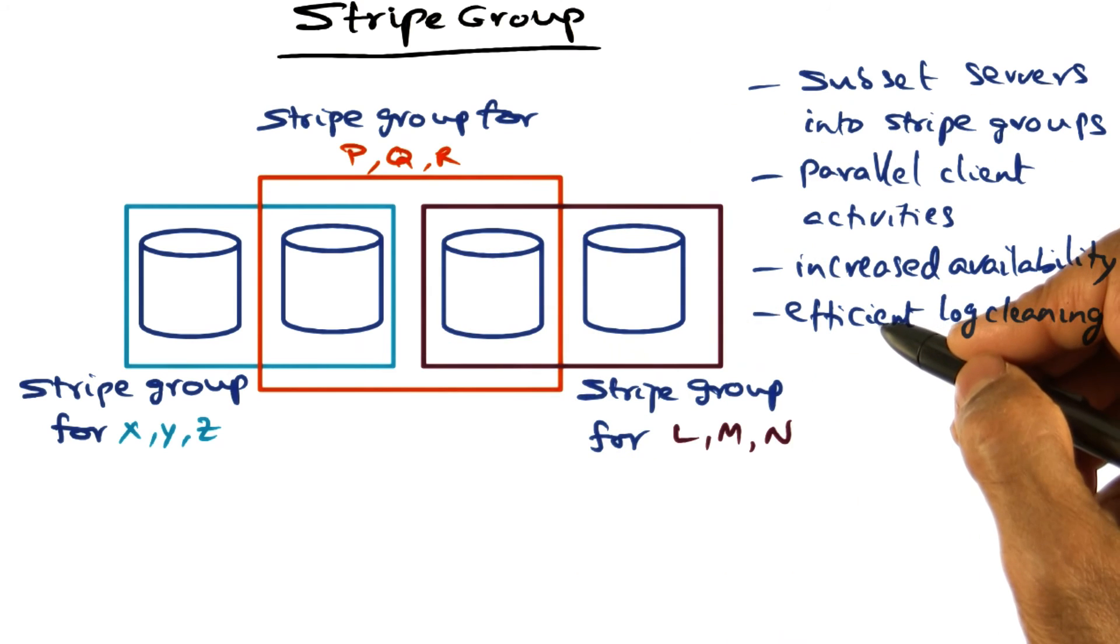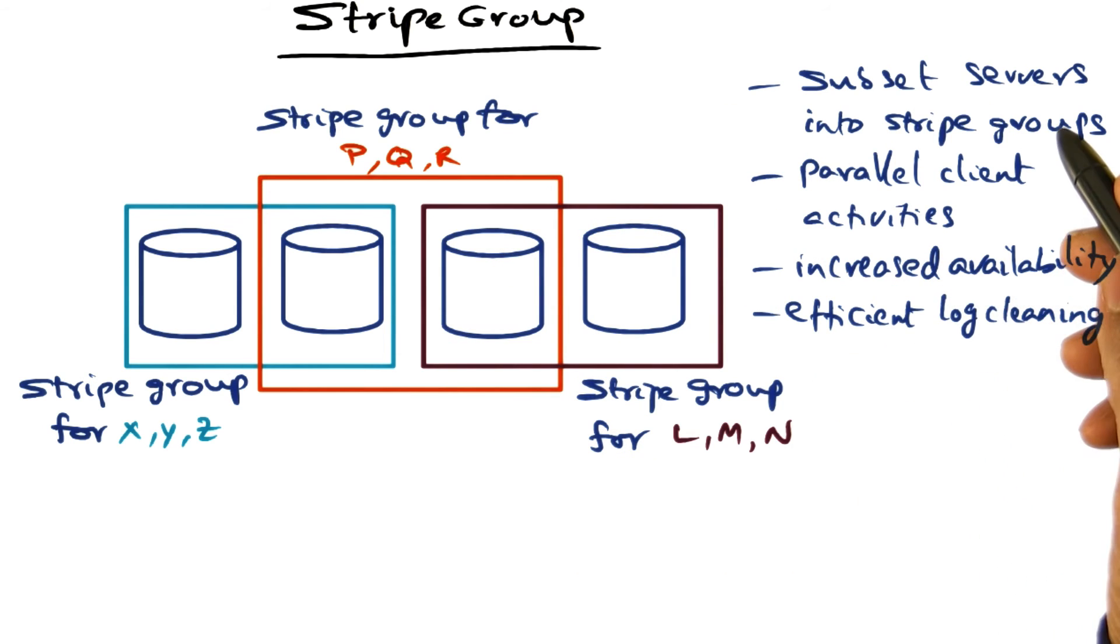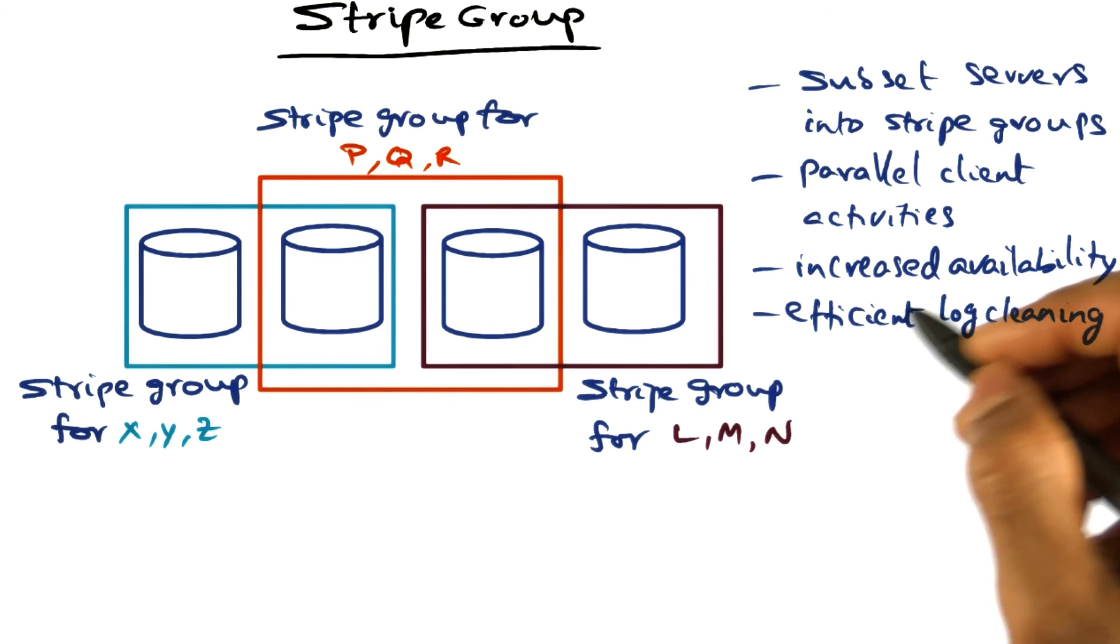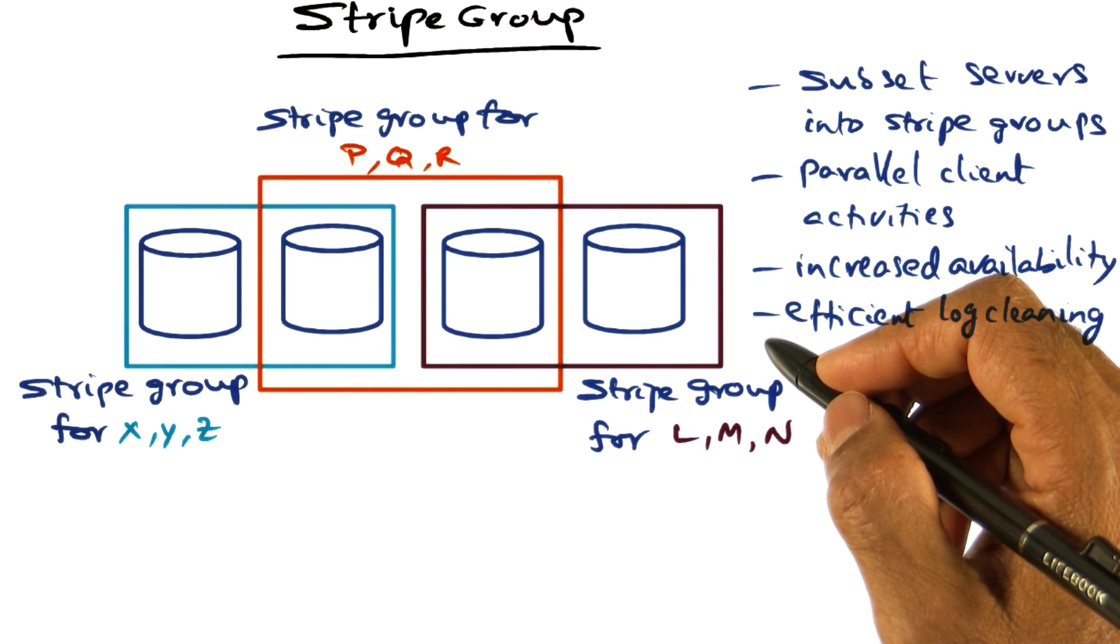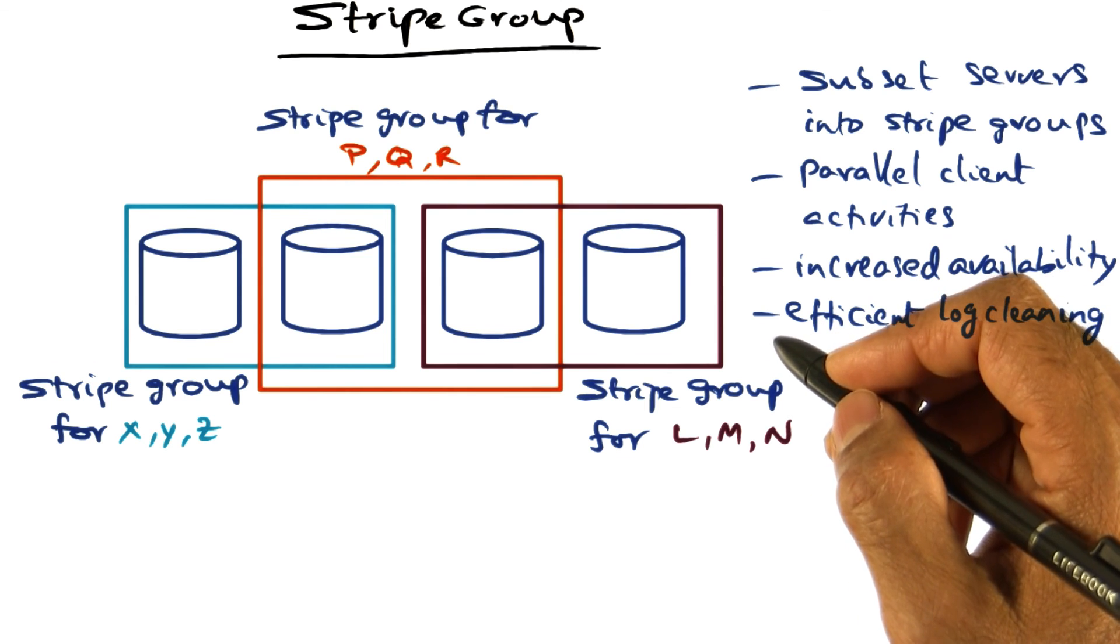That's the idea of subsetting the server group for striping so that you increase the availability and allow incremental satisfaction of the user community in spite of failures that may be happening in the system as a whole.